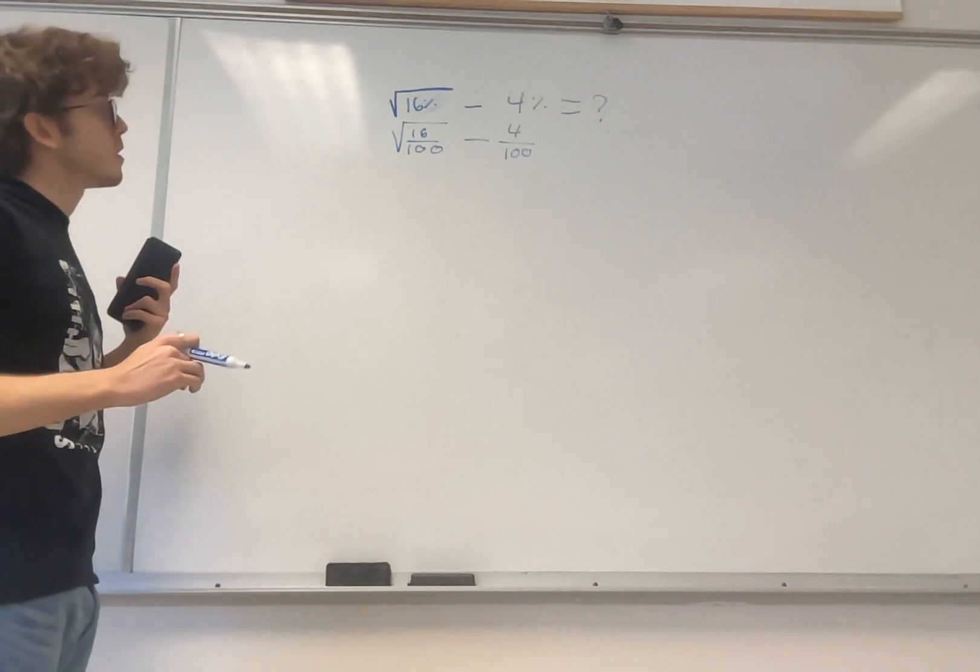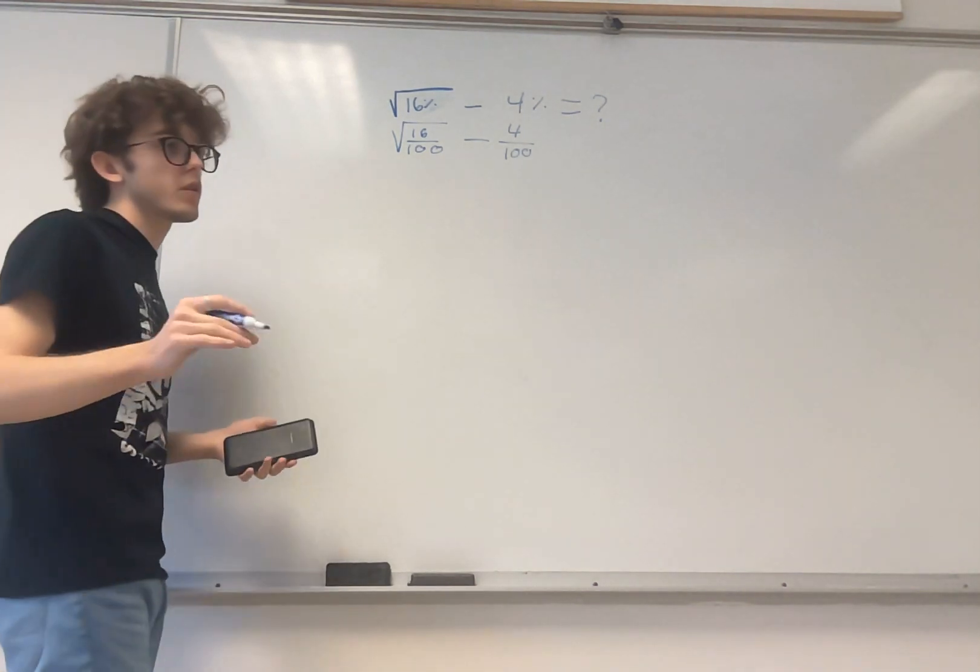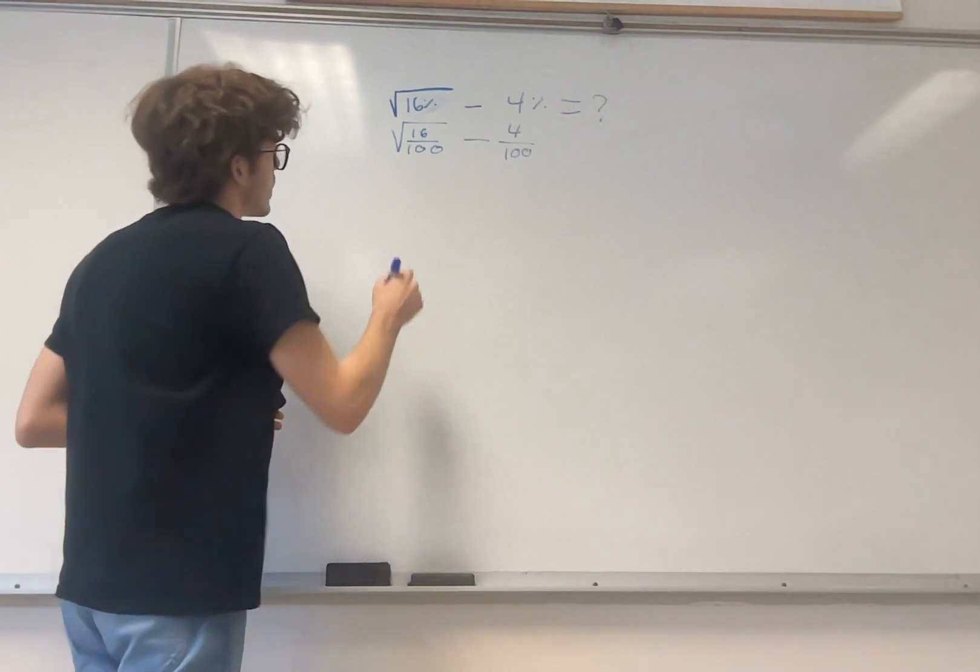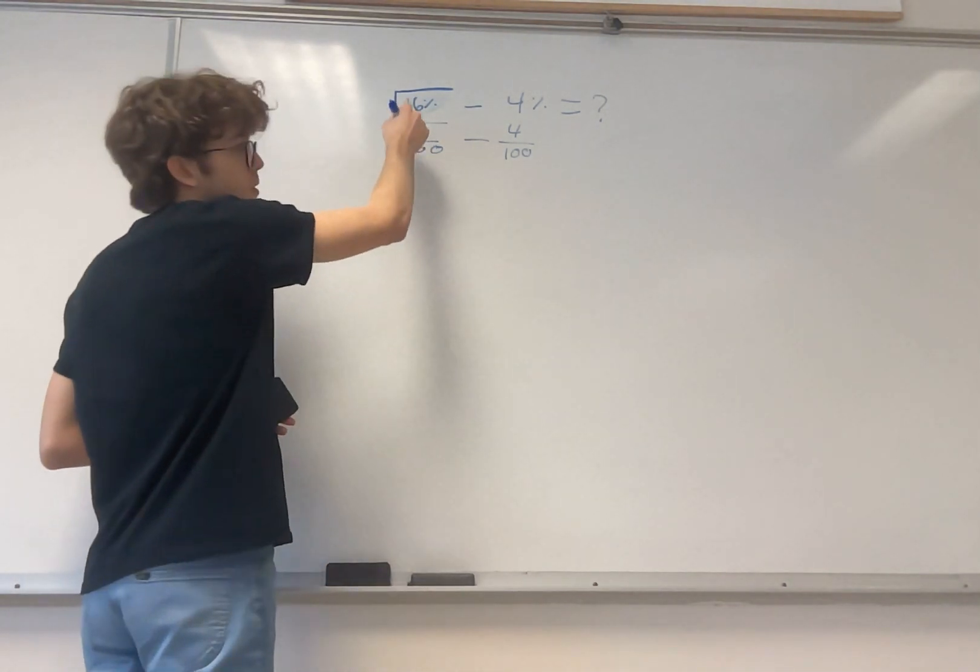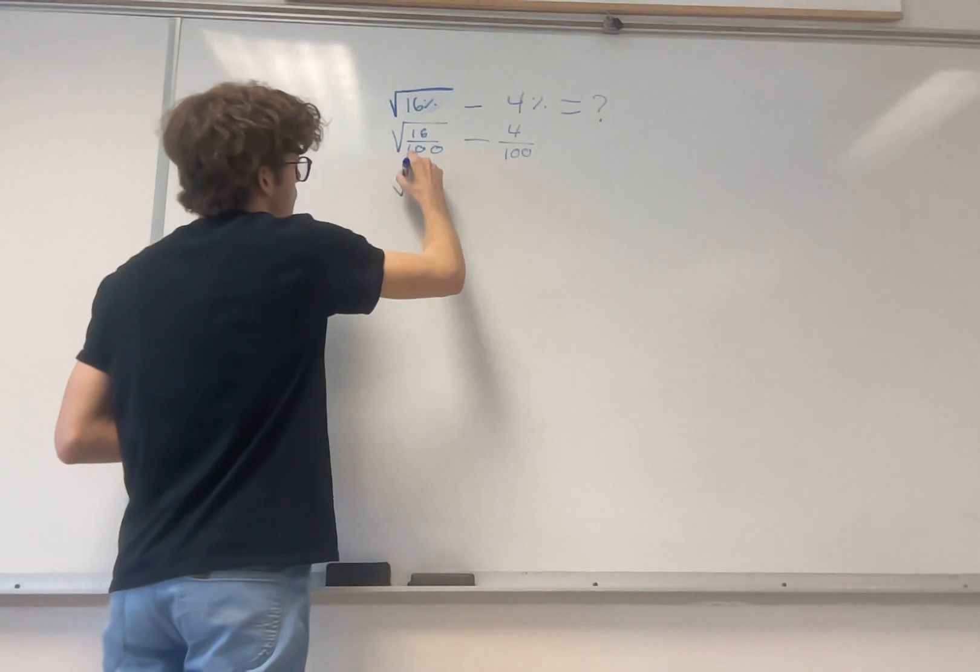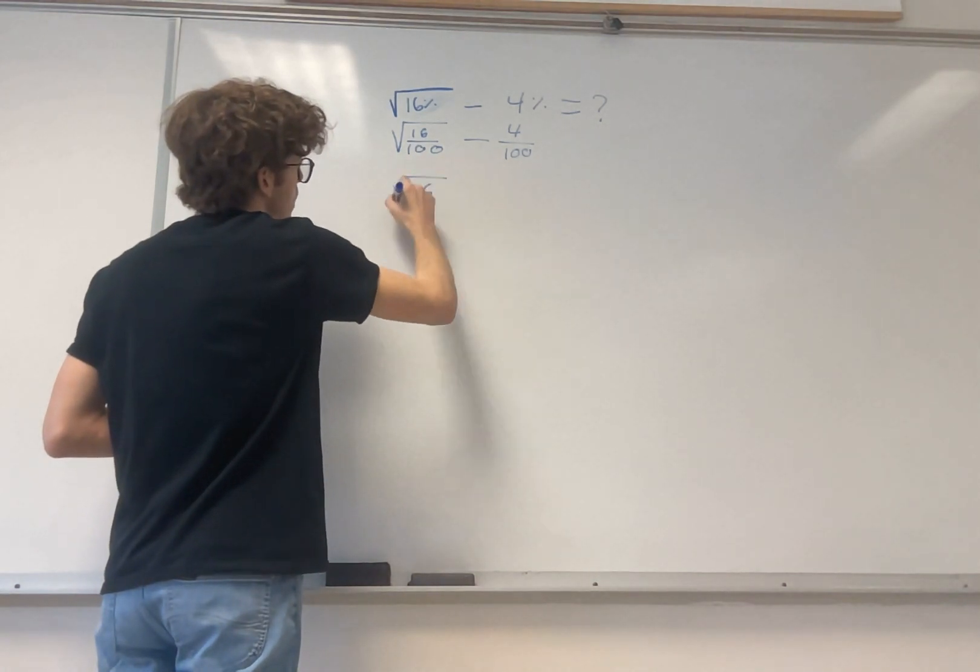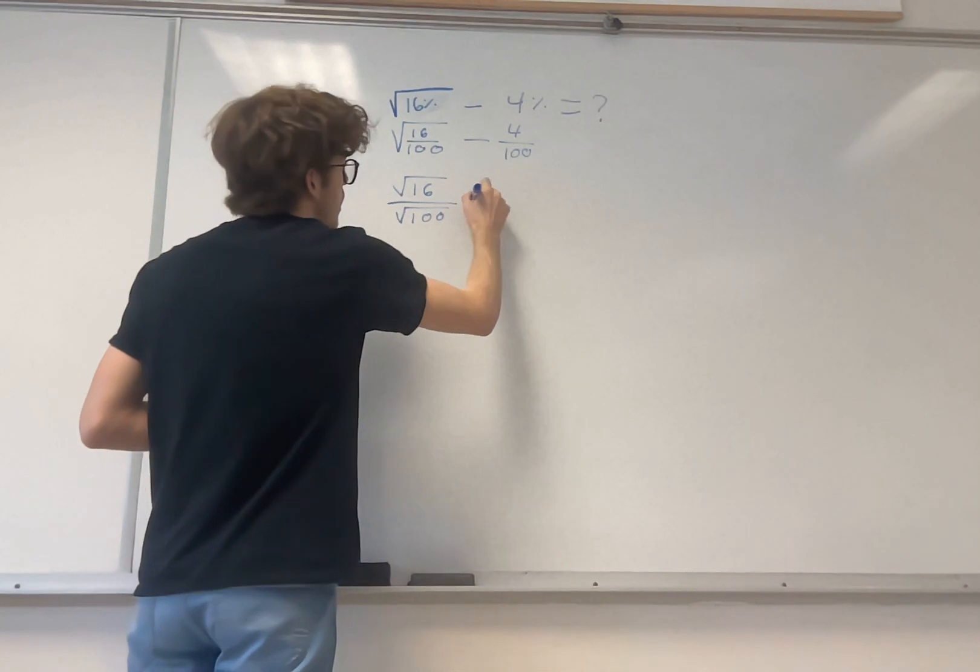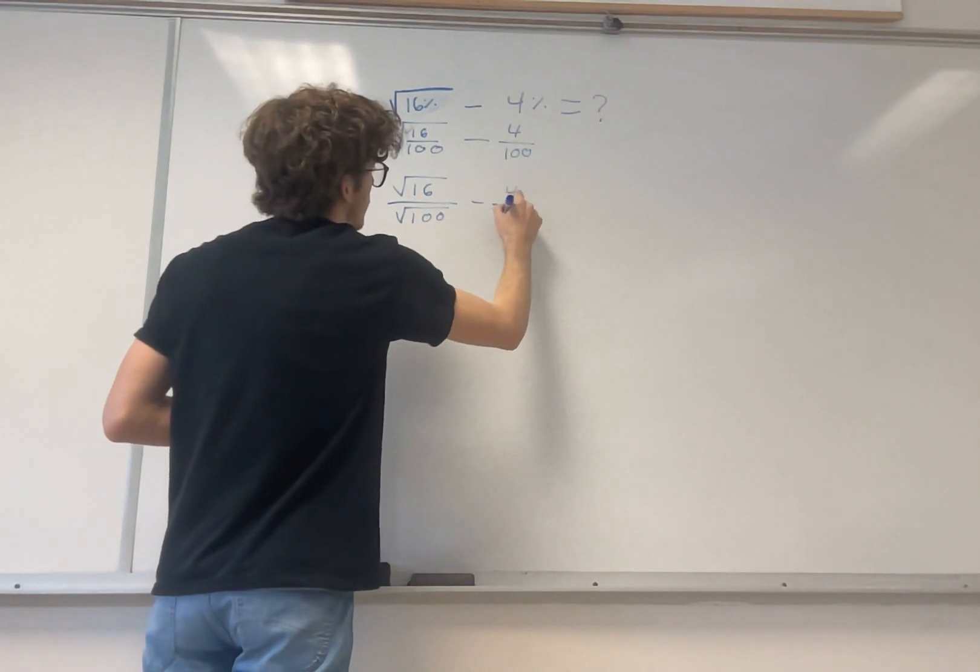So square root of 16 over 100 minus 4 over 100. Now, something that you can do here is remember our square root rules. The quotient rule says we can split these up into their two separate components of square root of 16 over square root of 100 minus 4 over 100.